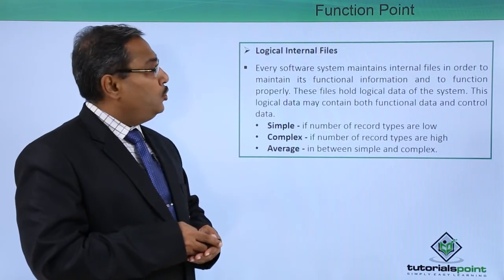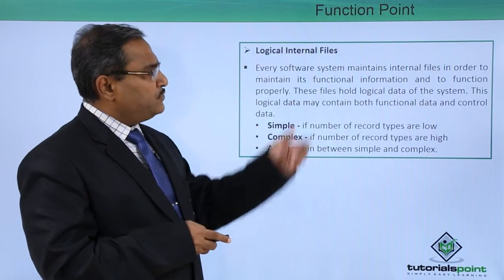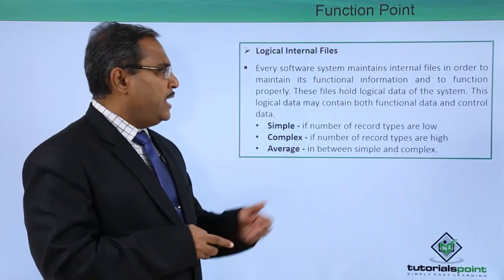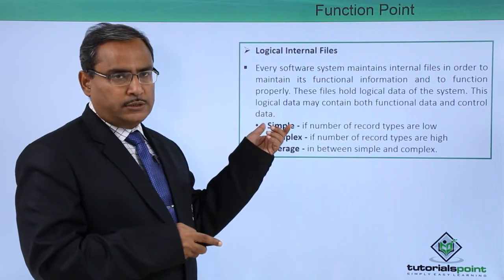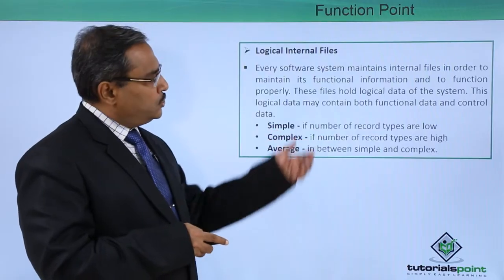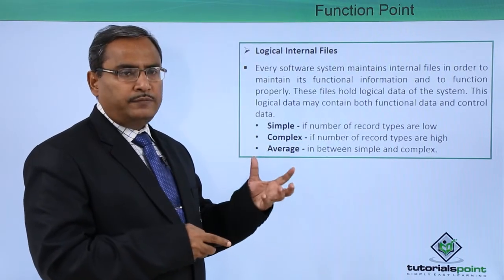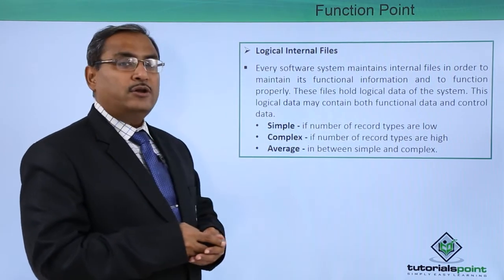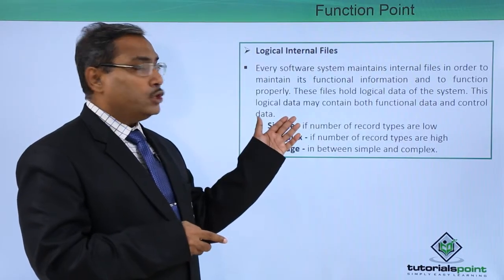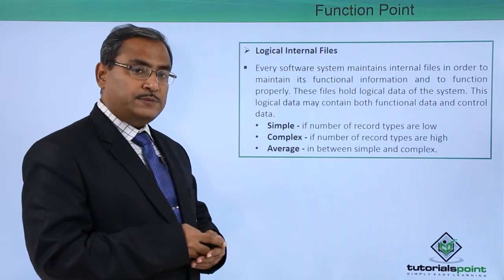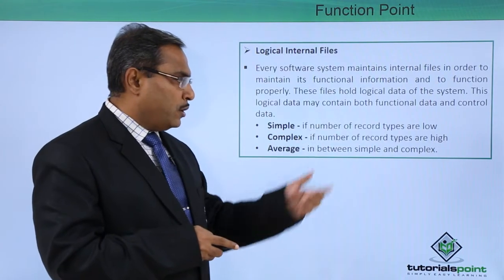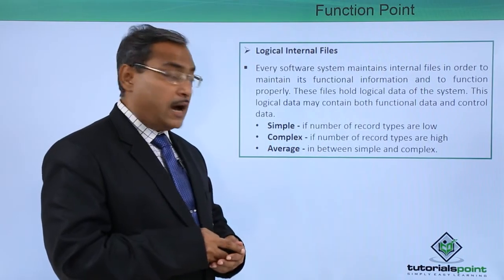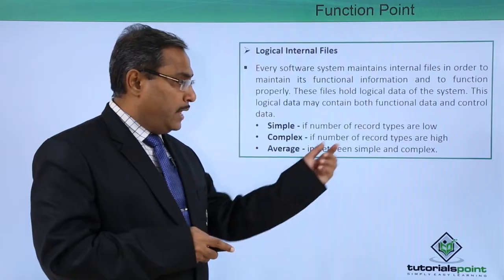Next we have logical internal files. Every software system maintains internal files in order to maintain its functional information and to function properly. These files hold the logical data of the system, which may contain both functional data and control data. Simple means if the number of record types are low, complex means if the number of record types are high, and average means in between simple and complex.